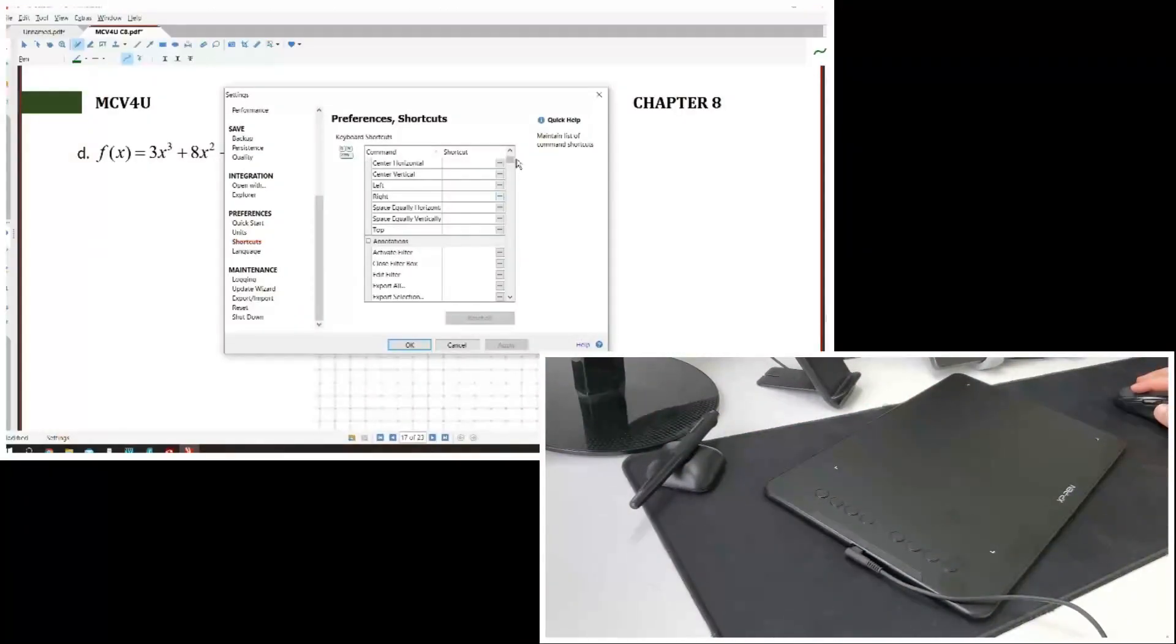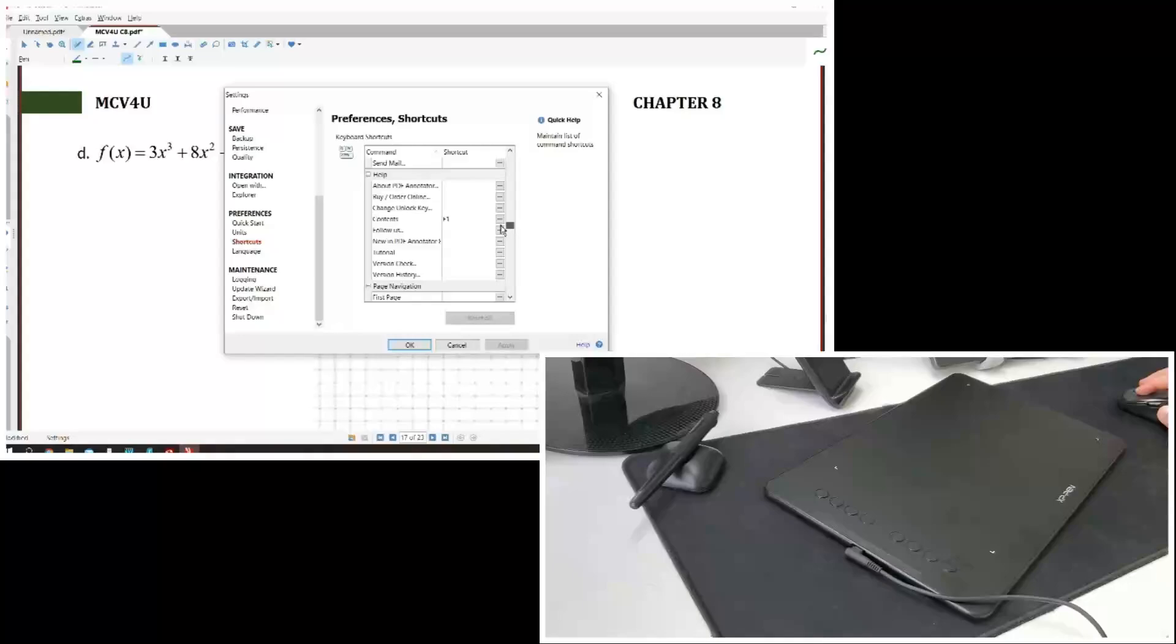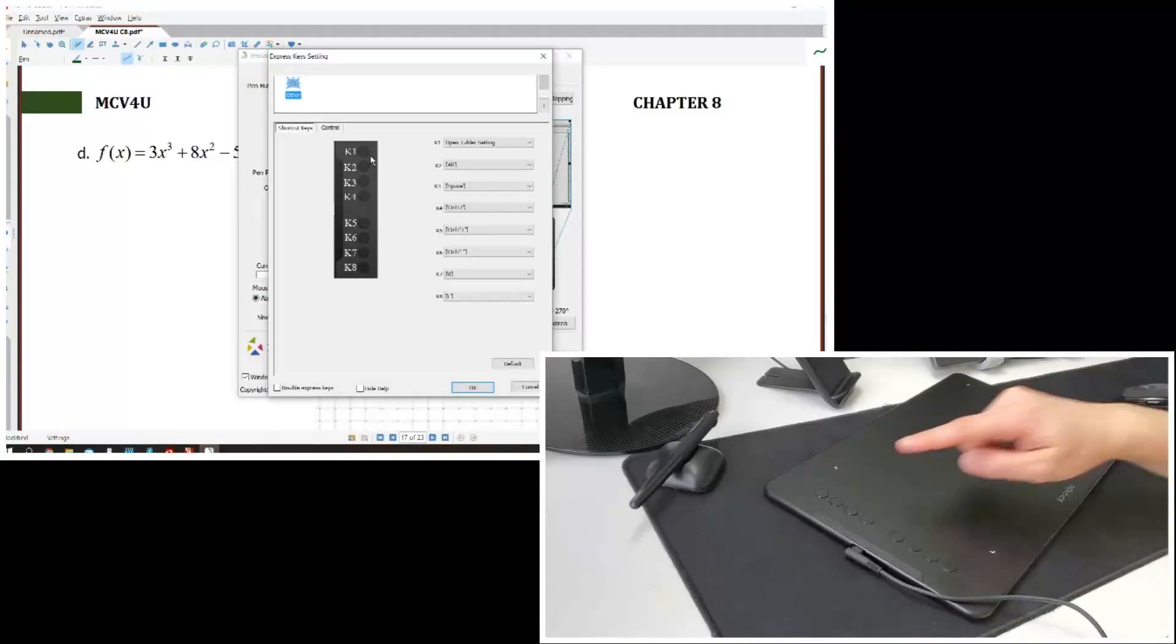You can also assign tablet express keys. To do that, you need to know the keyboard shortcuts of the software you use. Here they are for PDF Annotator 8. After you find the shortcuts, go to pen tablet software and then assign the express keys you want.